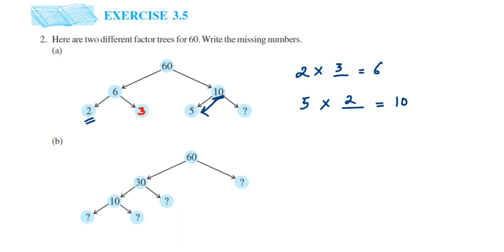30 times what will give us 60? We know 3 times 2 is 6, so 30 times 2 will give us 60. Here the answer will be 2.